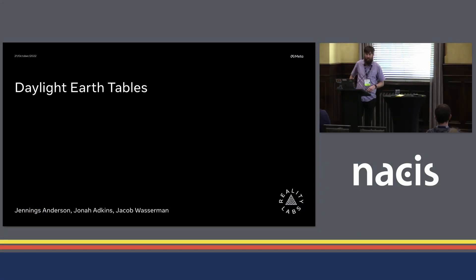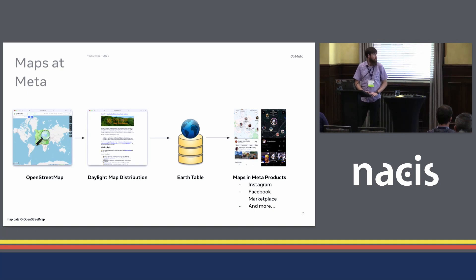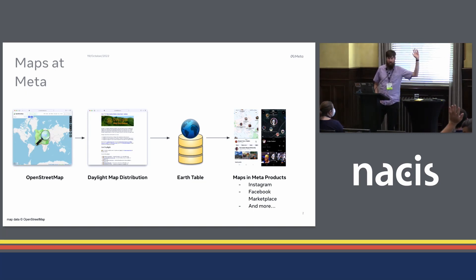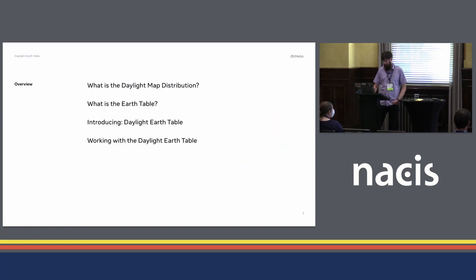Today we're going to be presenting what we're calling the Daylight Earth Tables. Quick overview: Maps at Meta are based on OpenStreetMap data. We start by ingesting OpenStreetMap and then we create the Daylight Map distribution. From Daylight, we create what we call the Earth Table, and then we'll talk about how that goes into our maps inside Meta products. I'll give a couple of code examples at the end to talk about how to access this data.